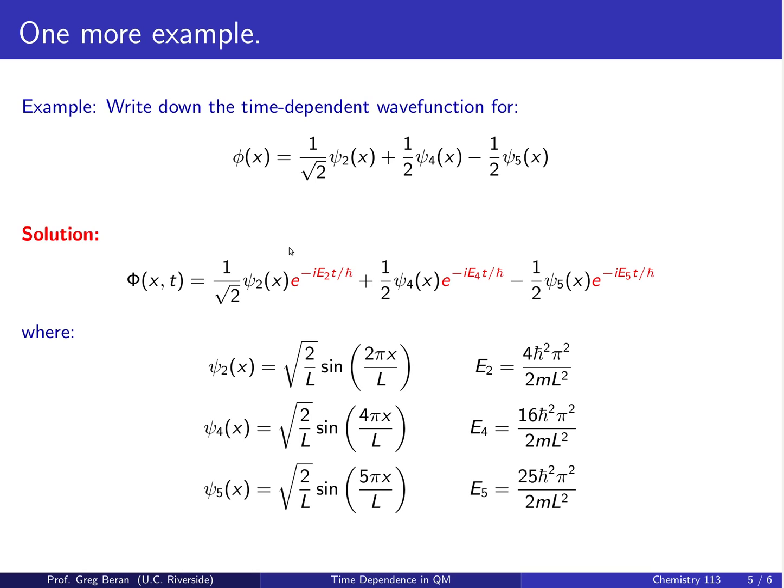Alright, again, the solution to this time-dependent wave function is simply multiplying each one of these wave functions in the right-hand side, the ψ₂, the ψ₄, and the ψ₅, by the appropriate time-dependent piece. So each gets multiplied by an e to the minus i E t over h-bar factor.